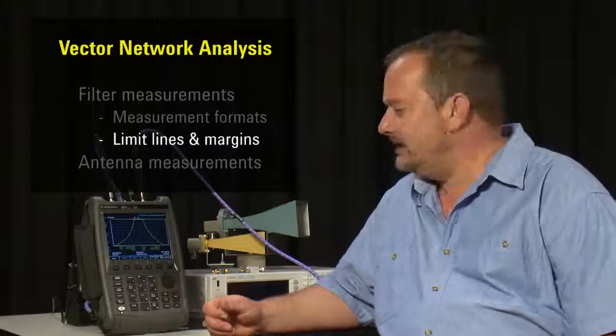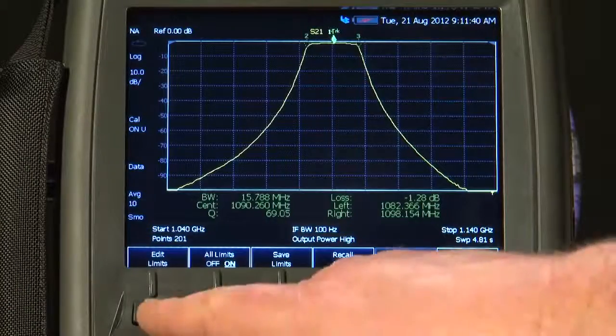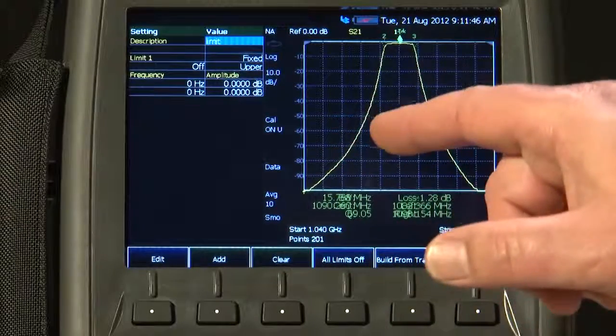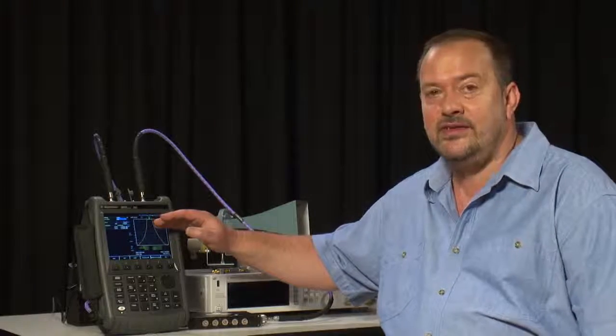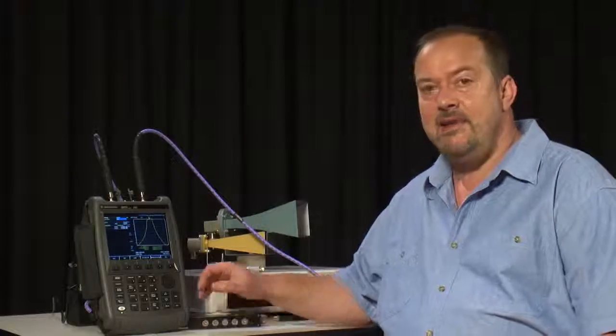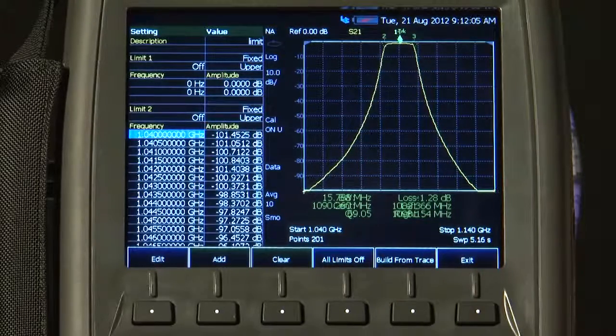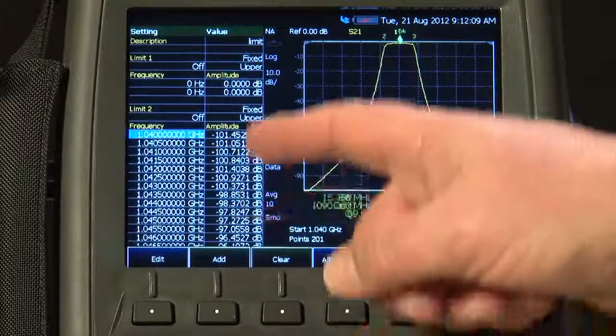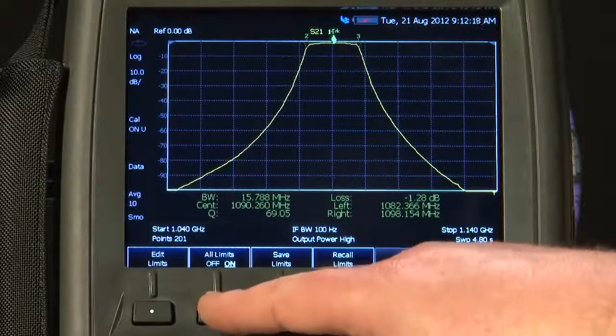What is especially surprising on a handheld Vector Network Analyzer is the ability to set limit lines. If I press the Limit button, when I edit the limits, we can create a table here quite easily with a series of pass and fail limits with start and stop frequencies and amplitude levels that the filter must pass in order to give the operator a pass or fail indication. But if we have a perfectly tuned device, as we do with this filter here, I can ask the FieldFox to build the limit lines automatically from this trace. It will treat this filter as the golden standard.